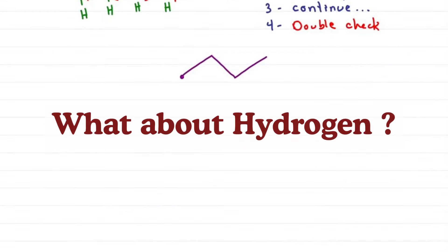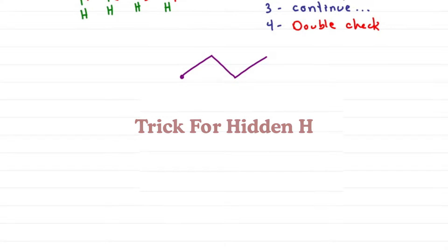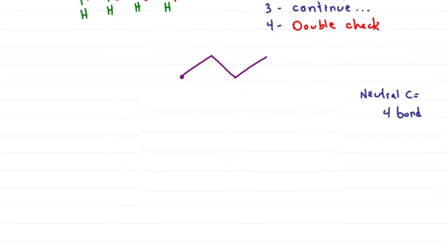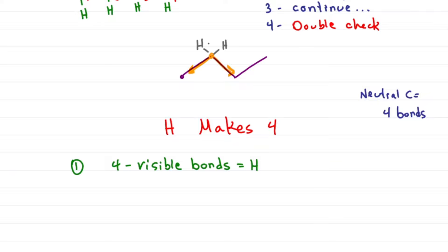What about hydrogen? We don't need them here, but if your professor asks or you need them for the molecular formula, use this trick. Since neutral carbons have four bonds, if you don't see four, H makes four. Option one: four minus visible bonds equals hydrogen. If this carbon has two visible bonds, four minus two equals two, so we have two hydrogens. Option two: just count to four. Here I see one, two, three, four bonds; here I see two, three, four.